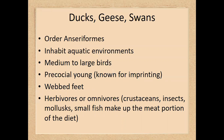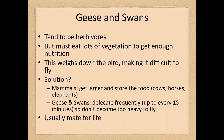Ducks specifically can be more omnivorous, while geese and swans tend to be herbivores. They eat a lot of vegetation, and because of that they also excrete quite a bit — defecating frequently, up to every 15 minutes, because keeping that much material in their body would make them very heavy. This means they don't necessarily extract a lot of nutrients from their food.